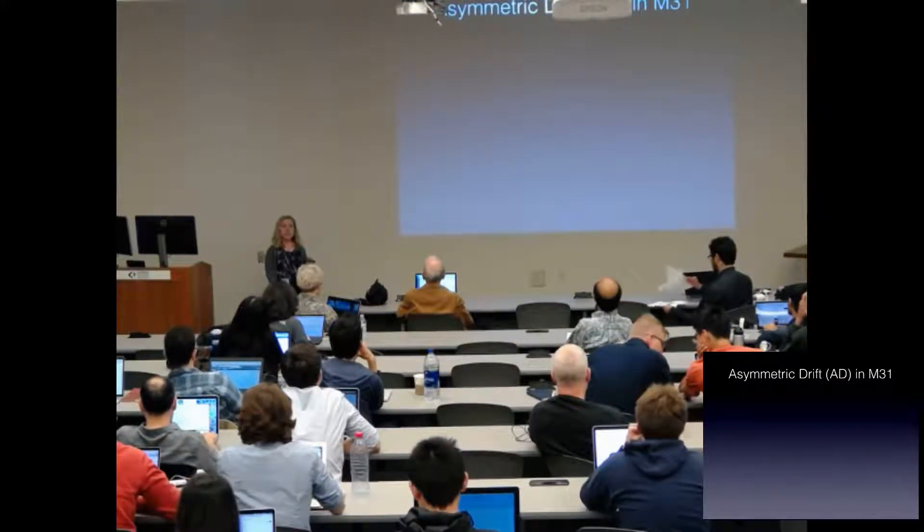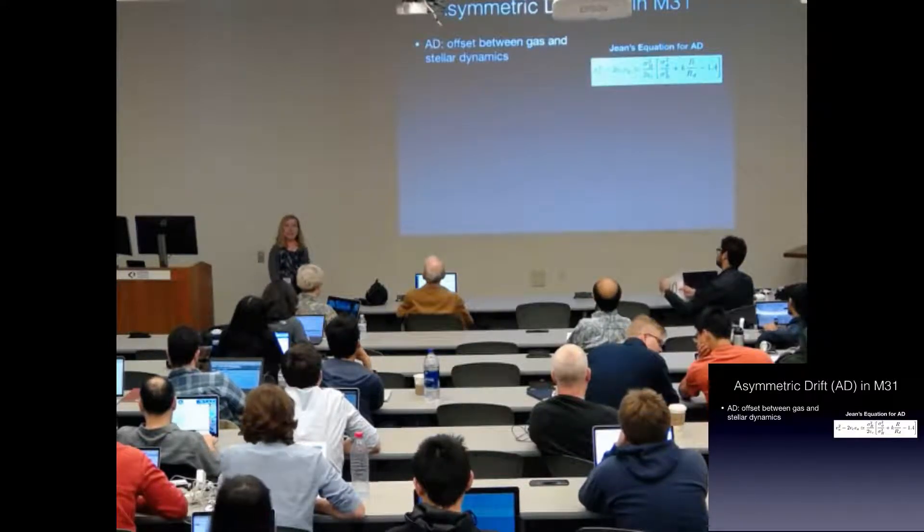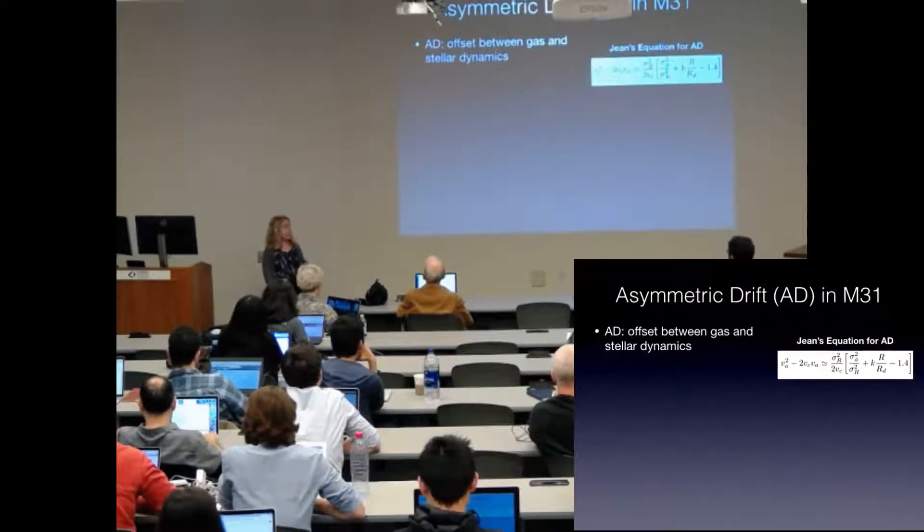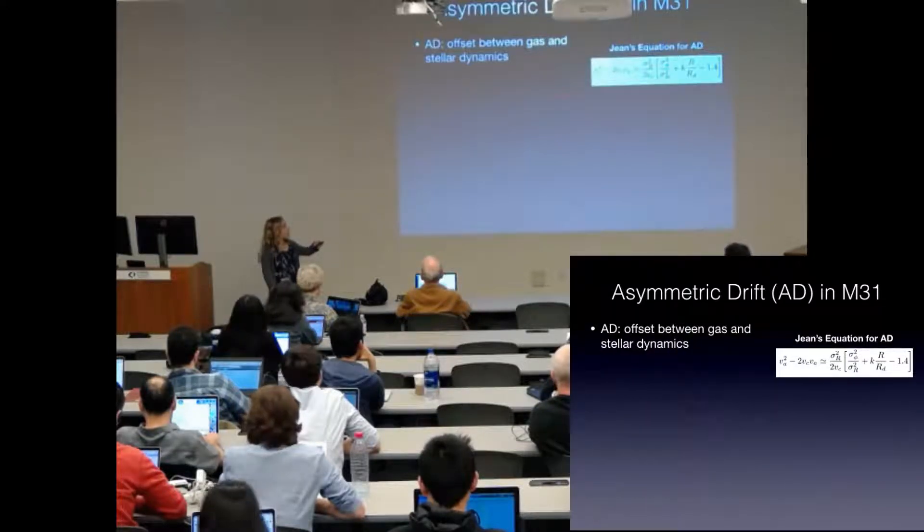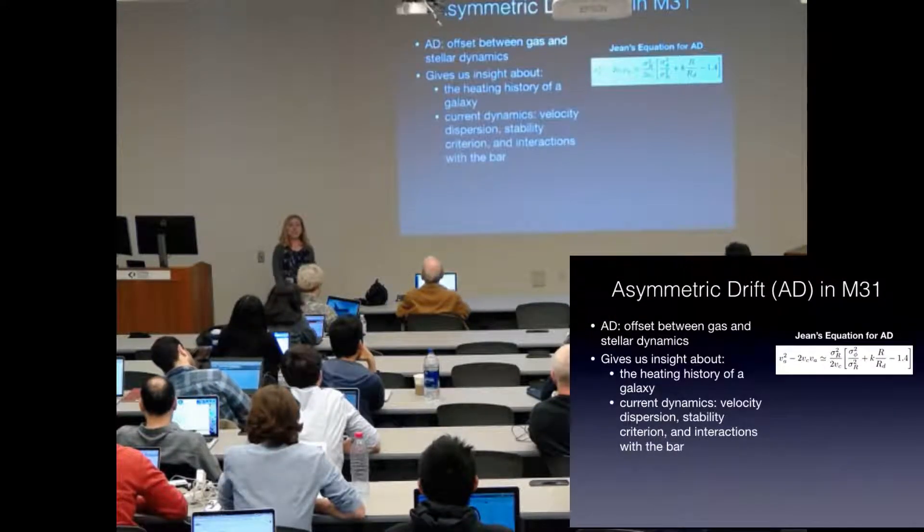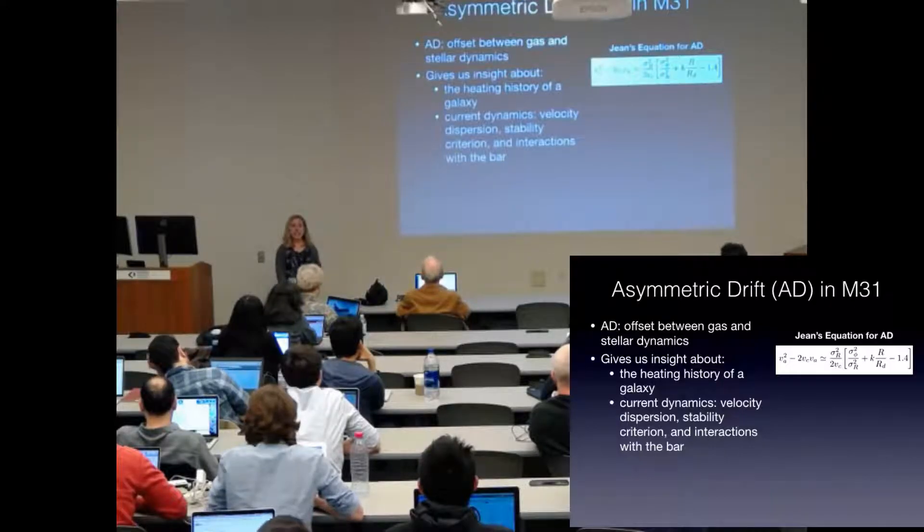Asymmetric drift is the offset in the dynamics between the gas and the stars in a disk and is VA in the Jeans equation. It's very important because it gives us insight into a galaxy's heating history.